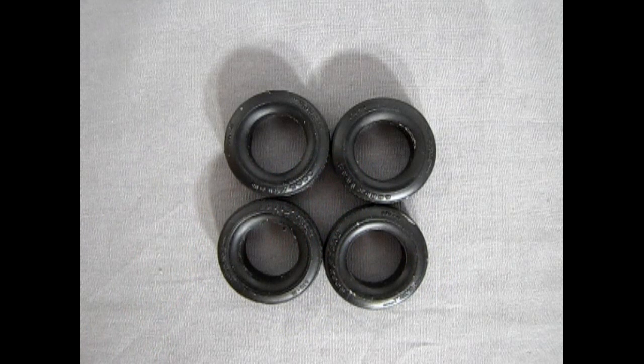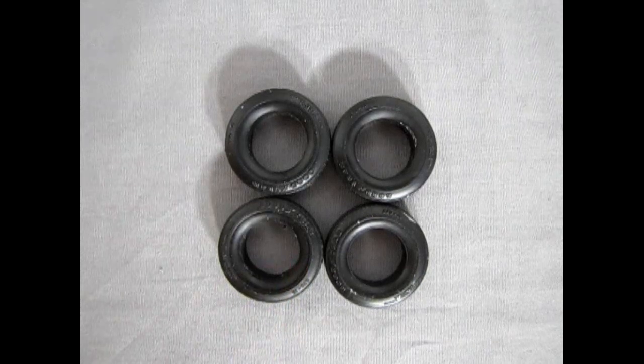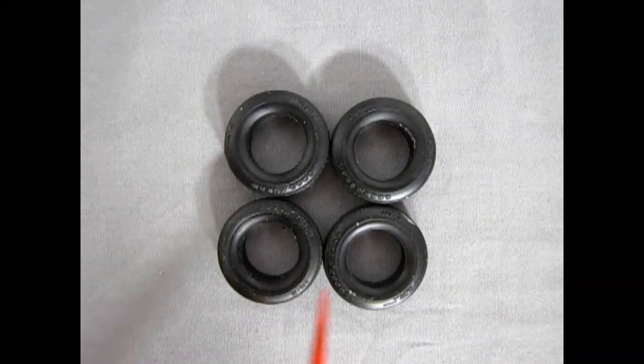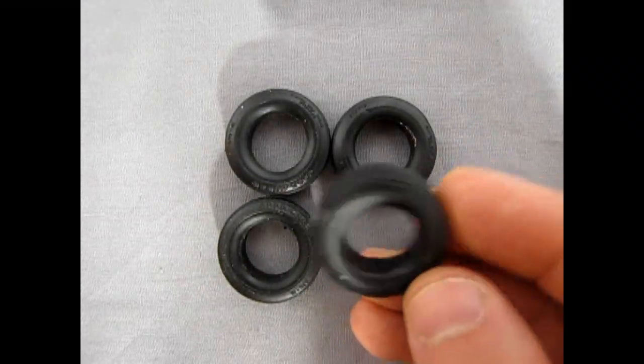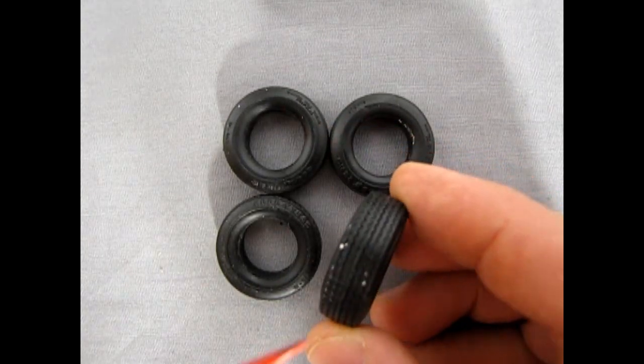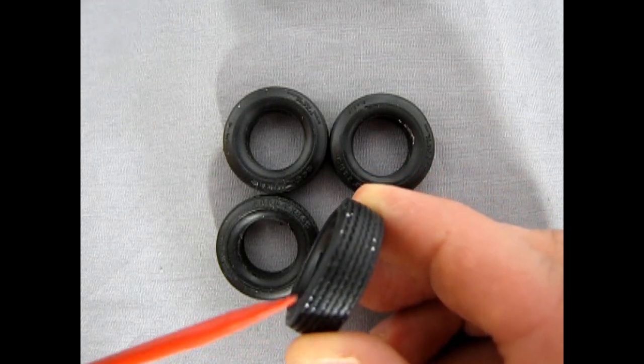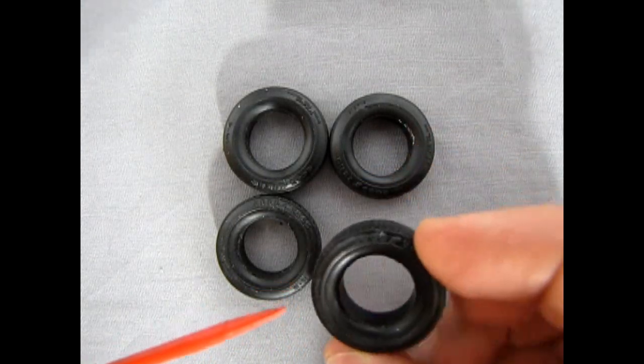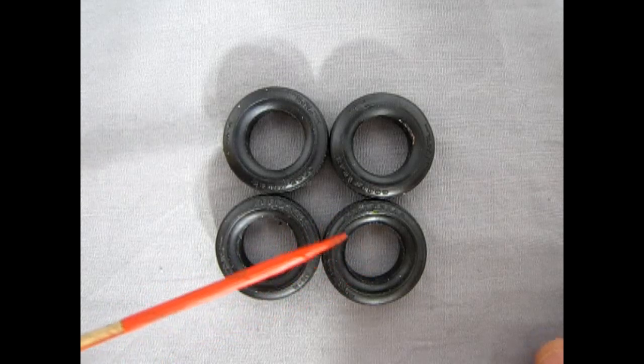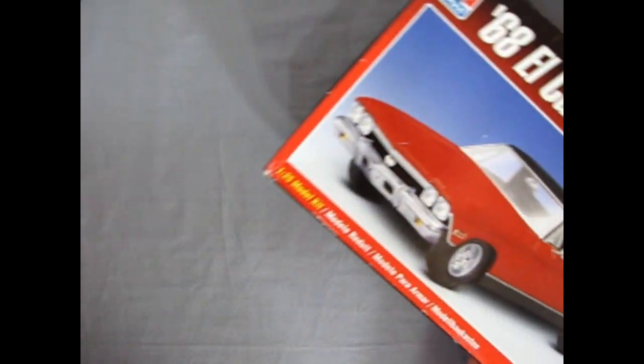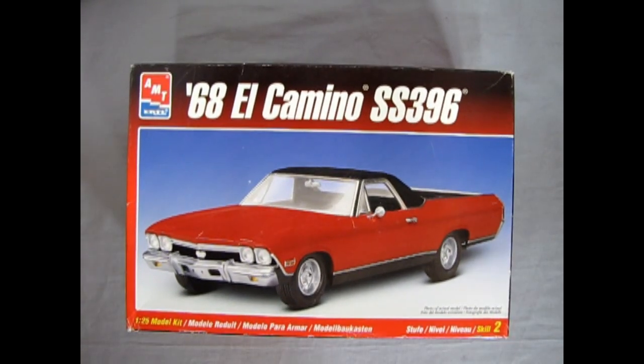And here we have our Goodyear Polyglass G70 15 tires. Which have been in earlier AMT kits. These of course are bigger heavier duty tires. Which would be perfect for the El Camino. And unfortunately in the box. There is a lot of silver paint. This was from these tires rubbing against the transmission. I suppose. There is some nice tread pattern in here. All in all these are really good tires. That could be easily painted. Just to get white Goodyear raised letters on here. And that completes our look at the 1968 Chevrolet El Camino SS 396 by AMT Earl.